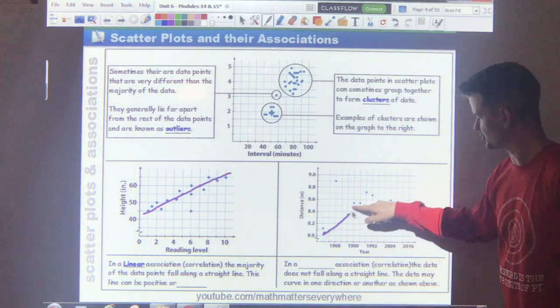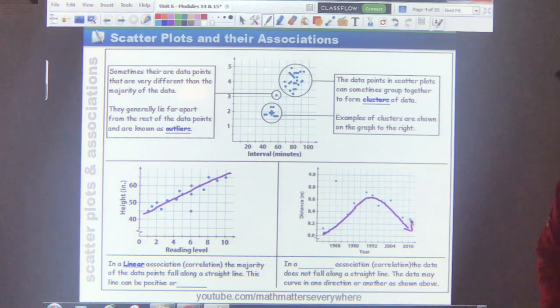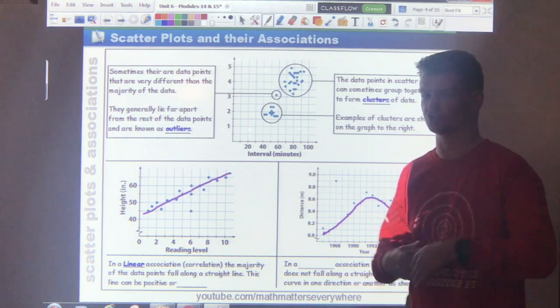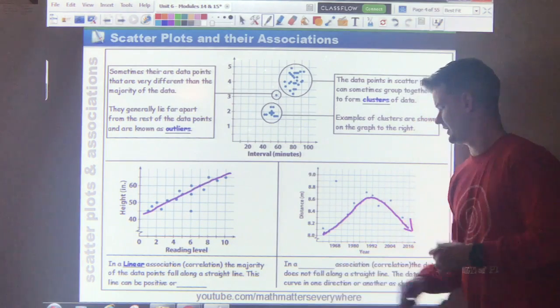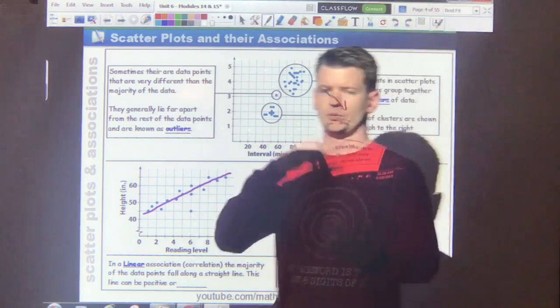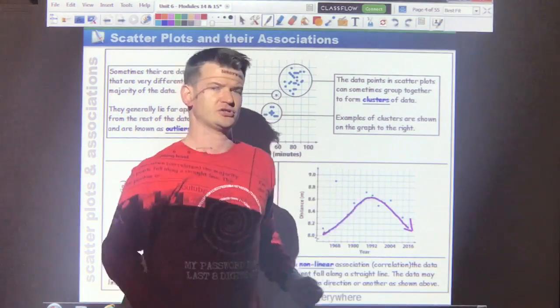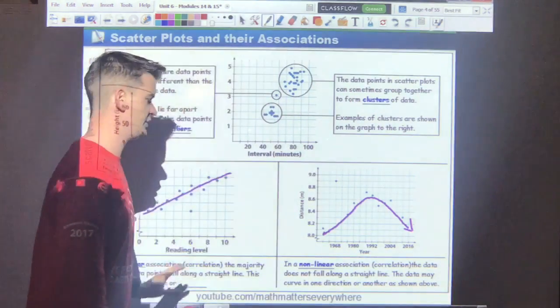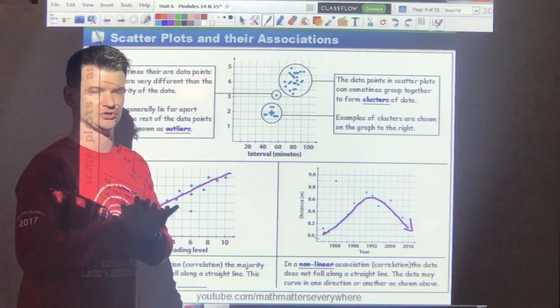Here though, if you look at this data, it starts to go up, then it goes down. Since the majority of the data does not fall along a straight line, that would be known as a non-linear association. So we have positive, negative, and no association. And then we have linear and non-linear associations.